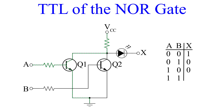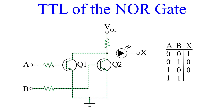Finally, let's turn input B back on so that the inputs are both equal to 1. Both Q1 and Q2 are biased properly, so current flows through both, but not to the LED. So for inputs A equals 1 and B equals 1, the output is 0.